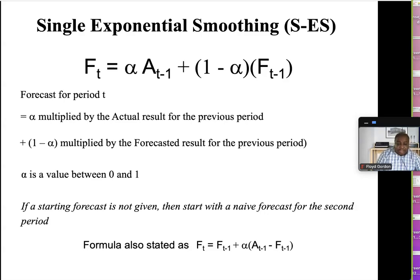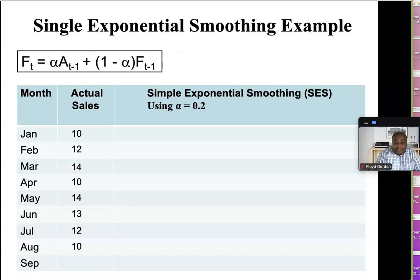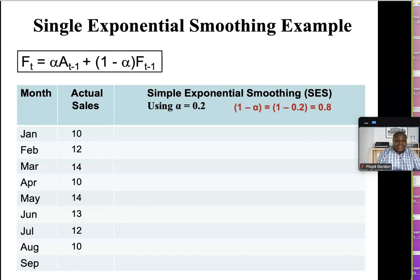You need to know your formulas going forward since you don't know which version of the formula you might be given, so choose which one you prefer and learn it. Here we go: we're doing a simple exponential smoothing forecast using alpha equals 0.2. If alpha is 0.2, then one minus alpha is 0.8.